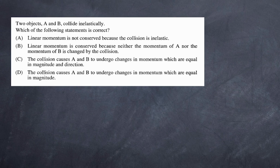Let's look at the first question — they'll get progressively more difficult as we go along. Two objects A and B collide inelastically. Which of the following statements is correct? A: linear momentum is not conserved because the collision is inelastic. B: linear momentum is conserved because neither the momentum of A nor B is changed by the collision. C: the collision causes A and B to undergo changes in momentum equal in magnitude and direction. D: the collision causes A and B to undergo changes in momentum equal in magnitude.